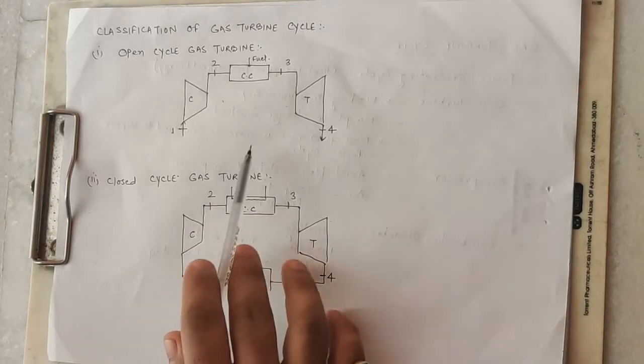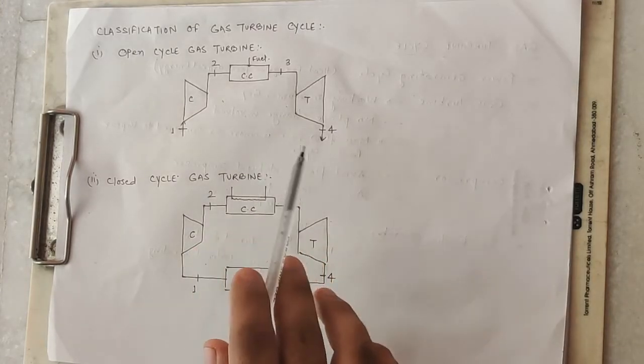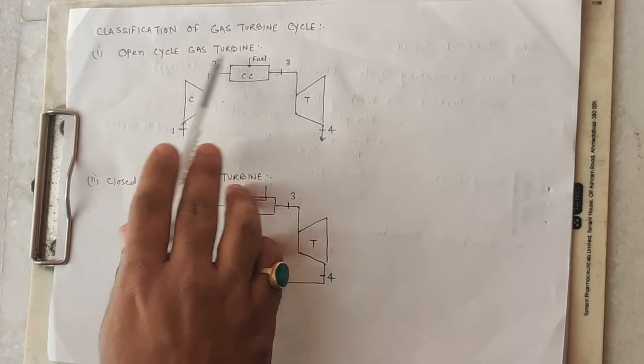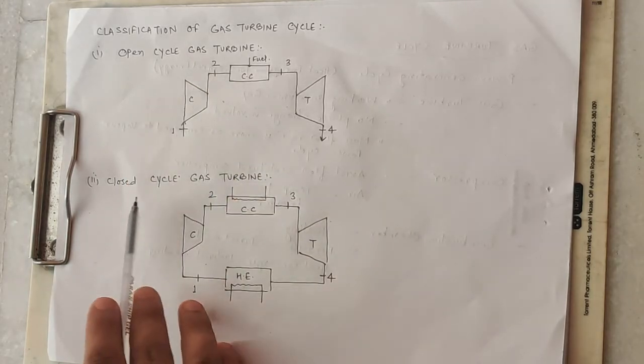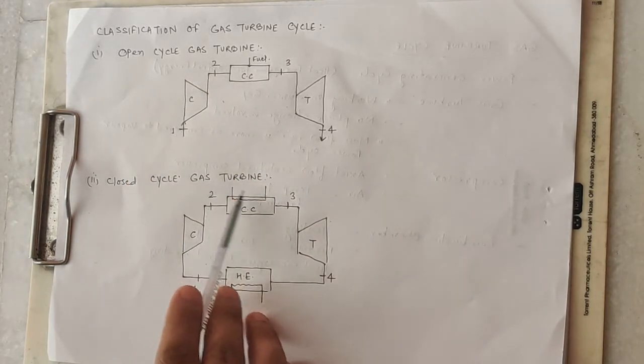Now, the gas turbine cycle is of two types: one is an open cycle gas turbine and the other is a closed cycle gas turbine.